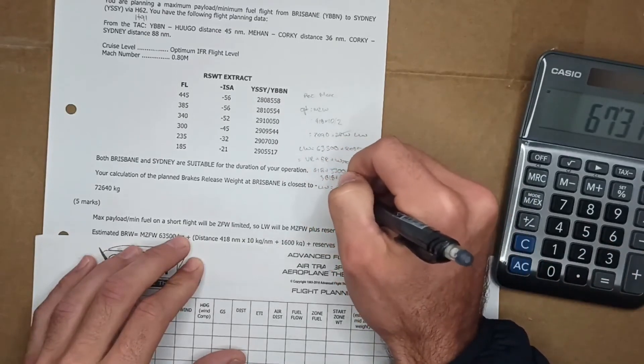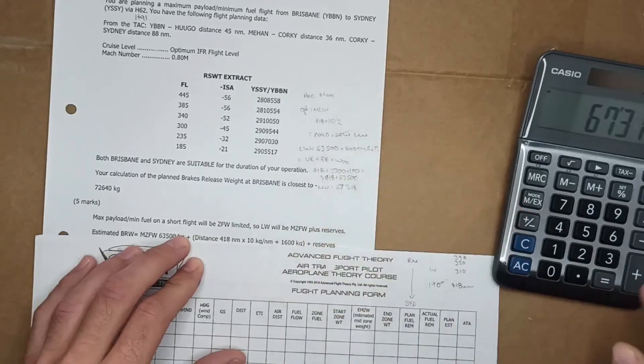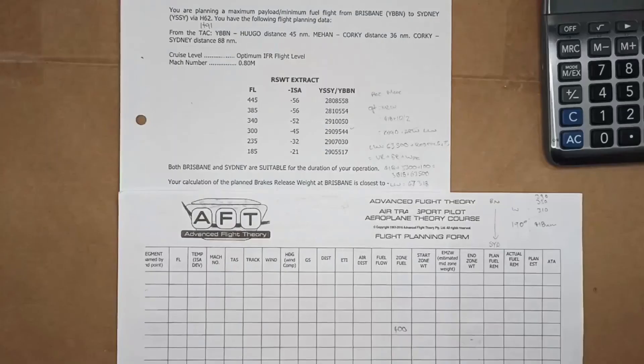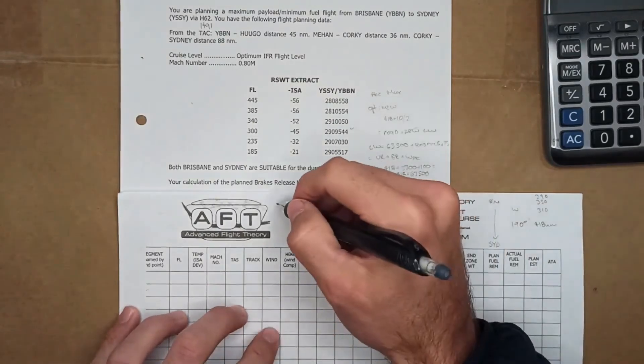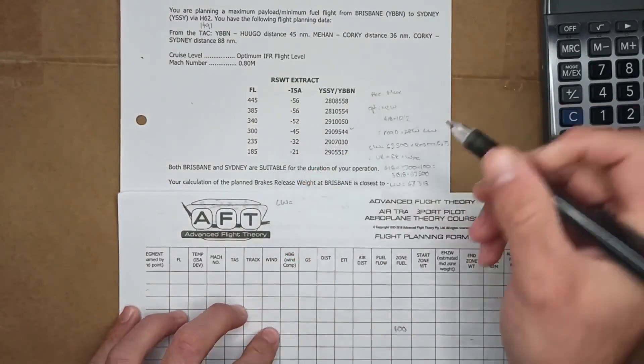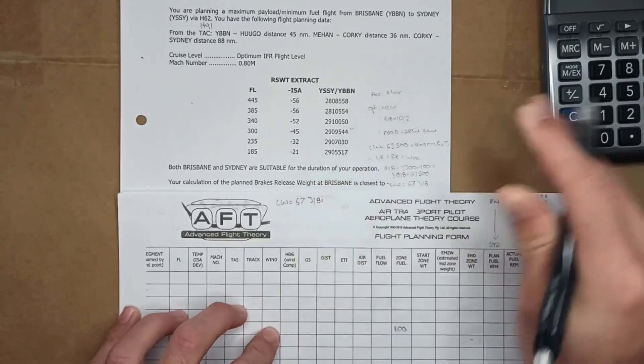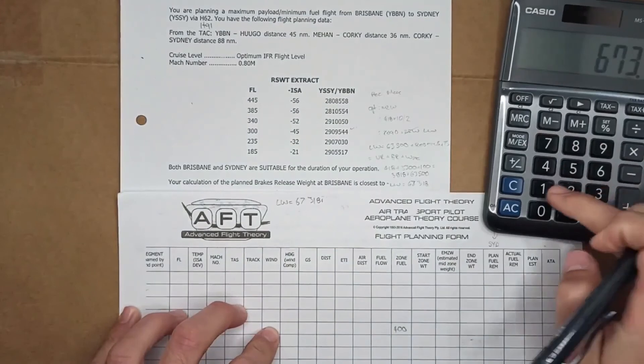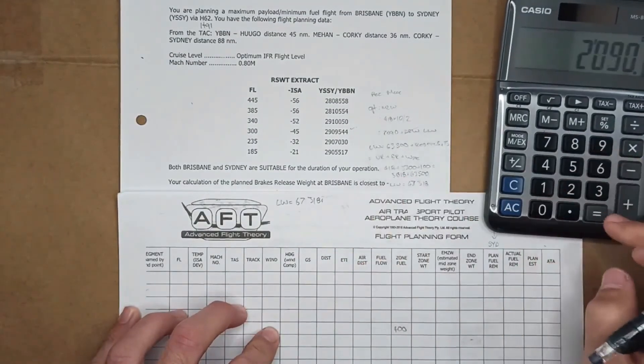So landing weight should be 67,318. So what we're going to do now is just work out that landing weight which we got there, 67,318 plus our estimated mid zone for optimum 2090.